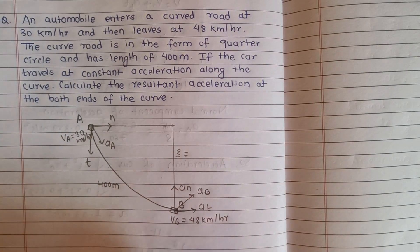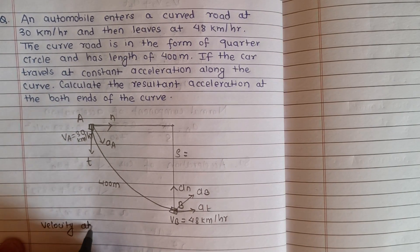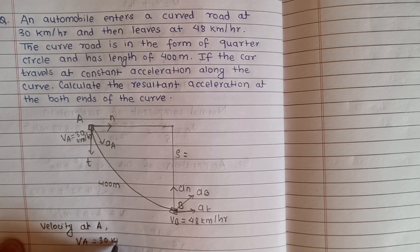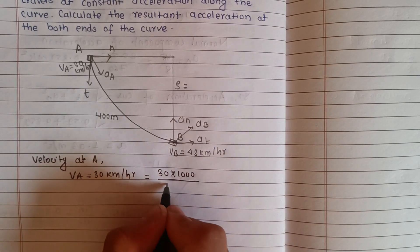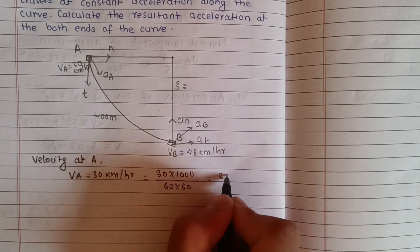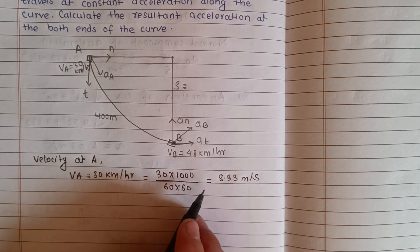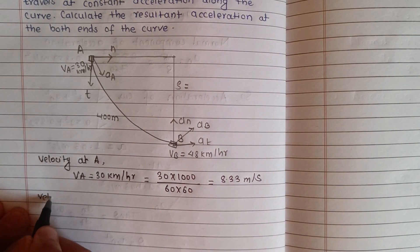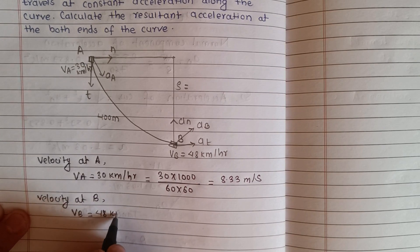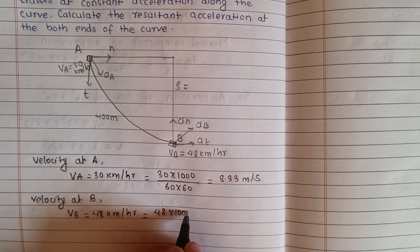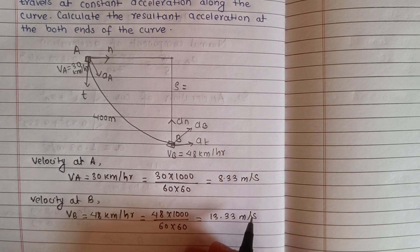Acceleration at A and acceleration at B. Velocity at A, Va = 30 km per hour. Converting: 30 × 1000 divided by 3600 gives 8.33 meter per second. Velocity at B, Vb = 48 km per hour. Converting: 48 × 1000 divided by 3600 gives 13.33 meter per second.